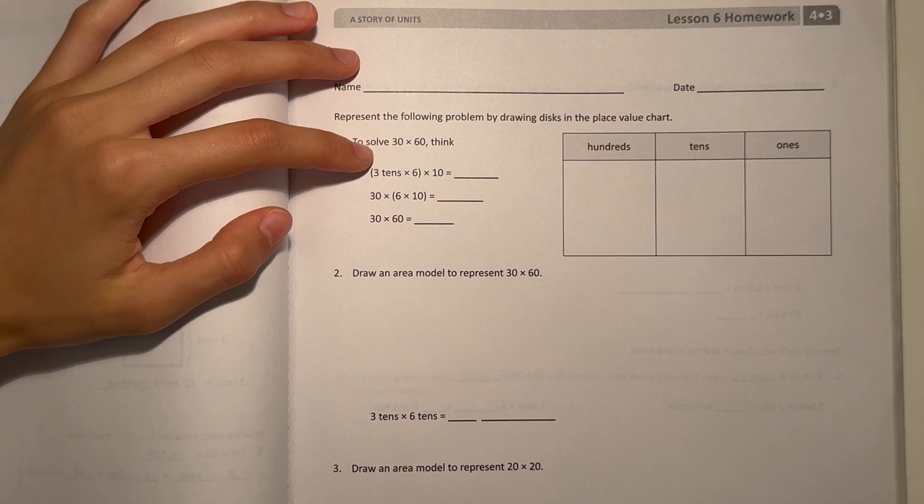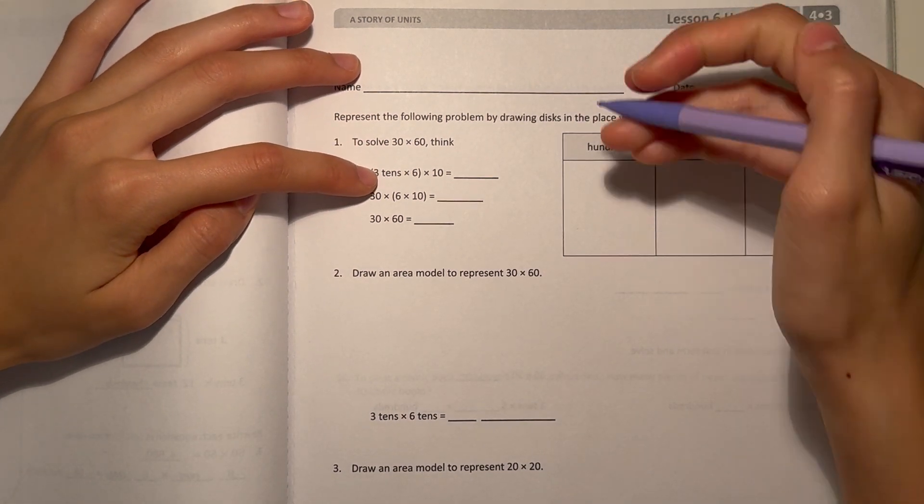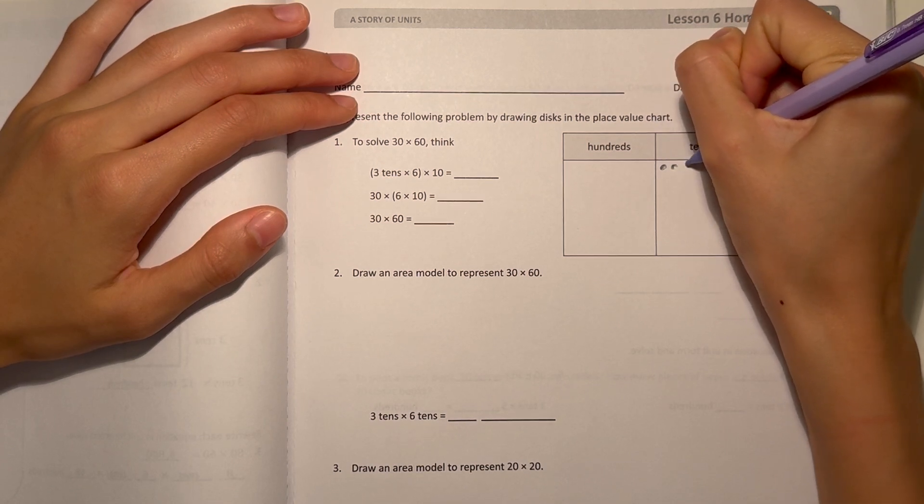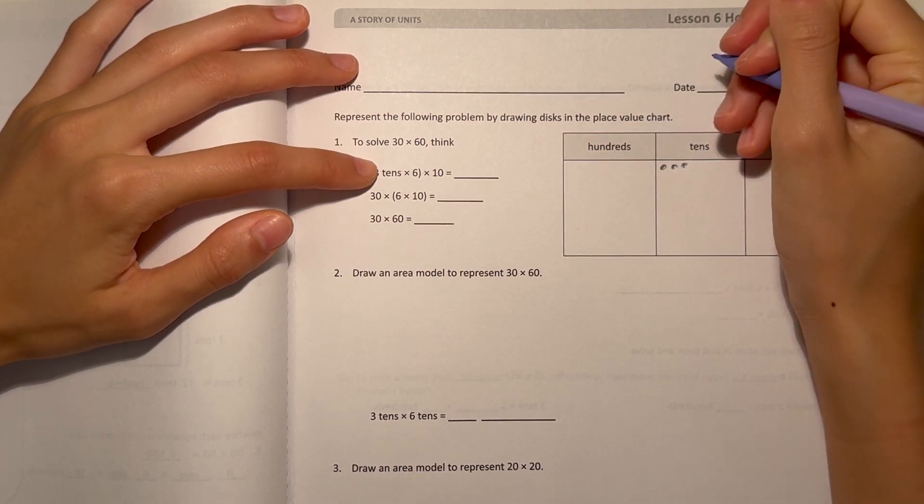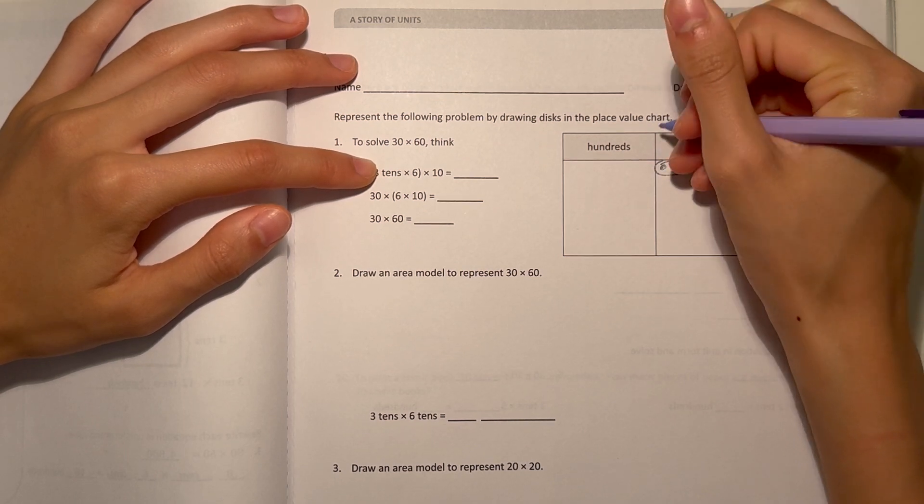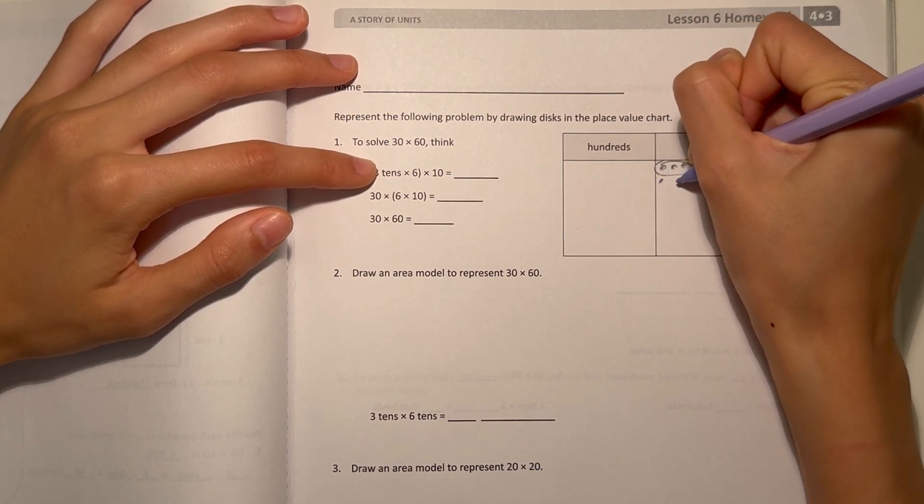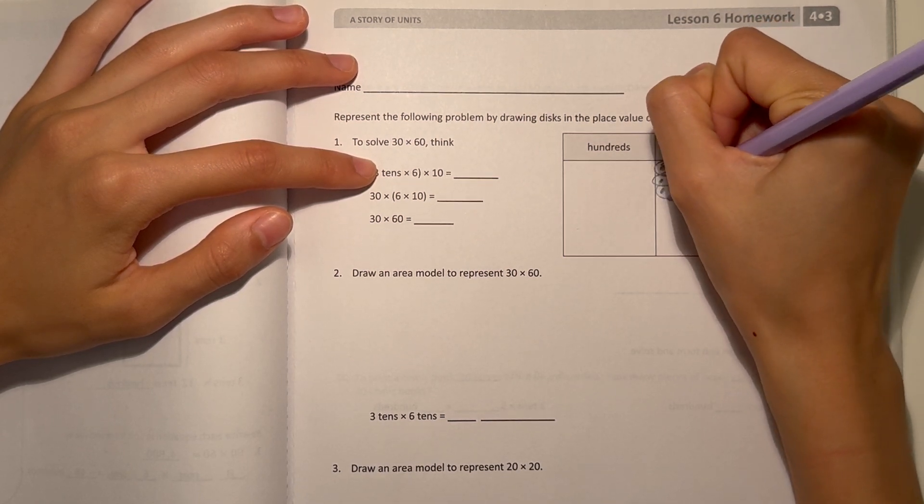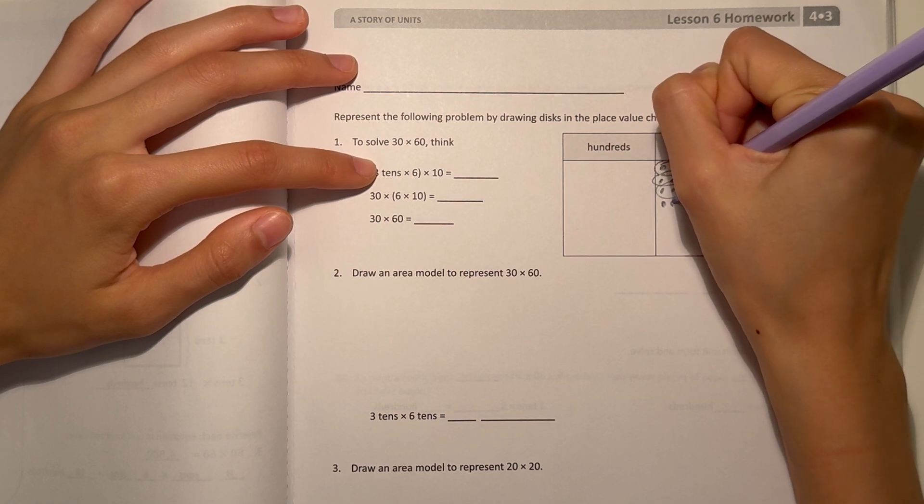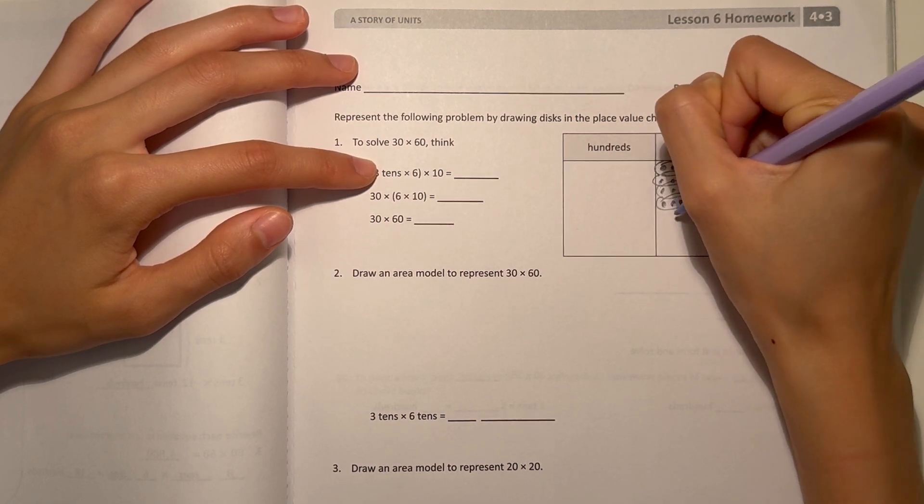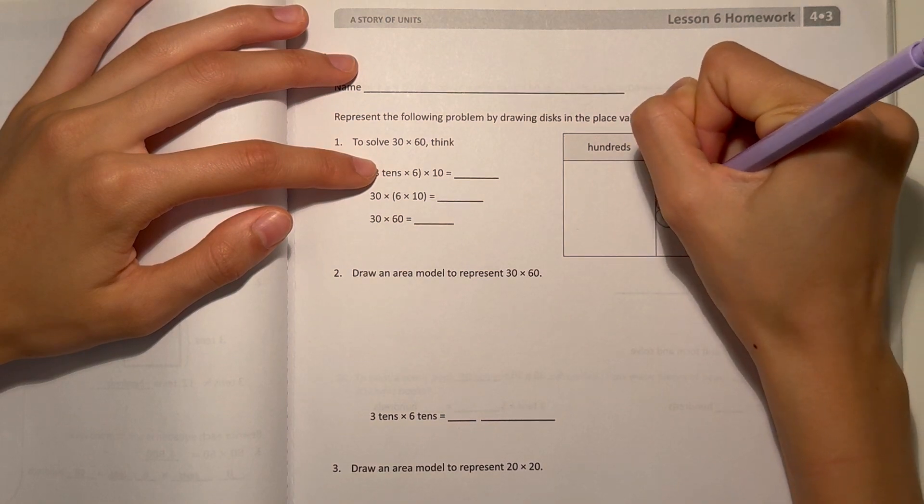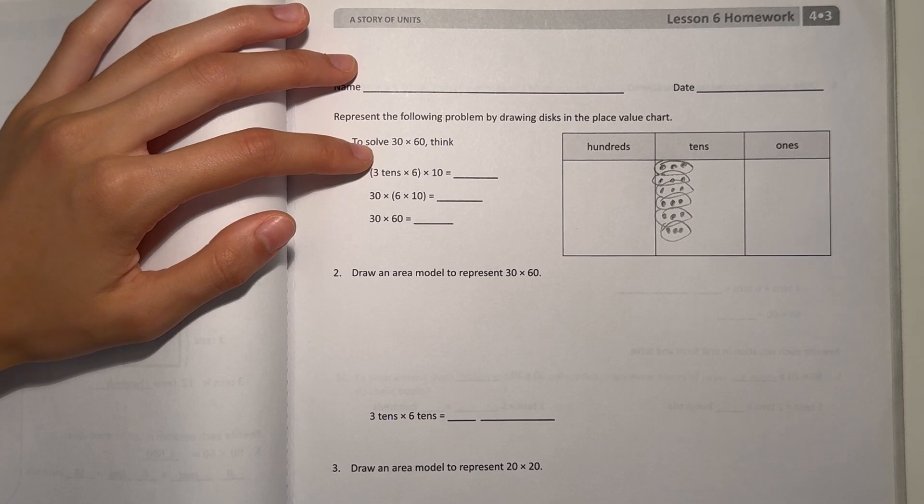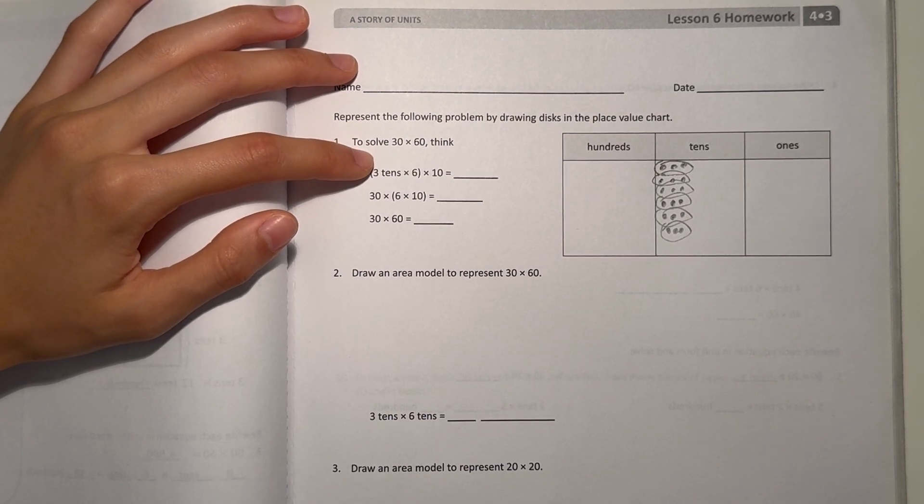So we're thinking like 3 tens times 6. 3 tens is 3 in the tens place, times 6. That means there's 6 of these groups. So we have one group, 2, 3, 4, 5, and 6. So we have 3 tens times 6.